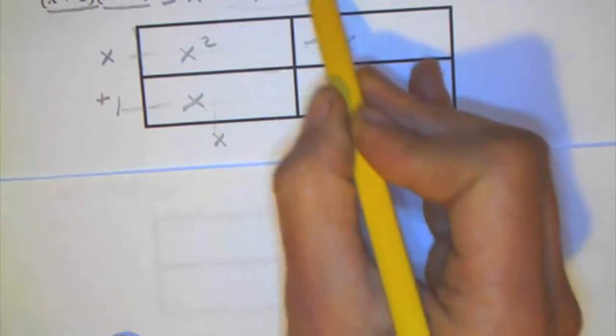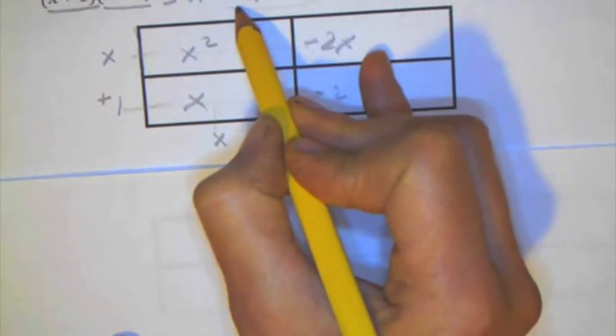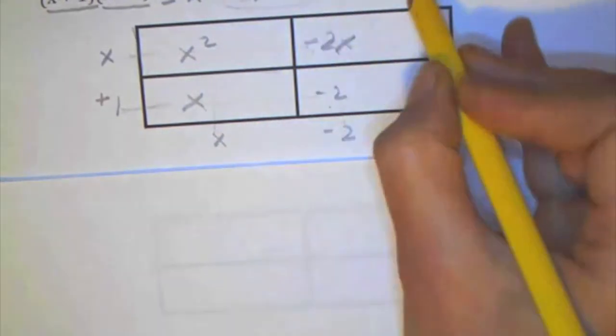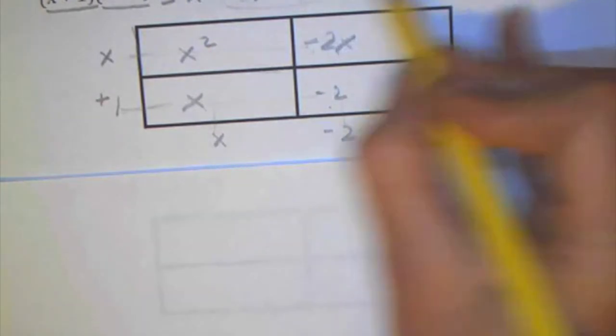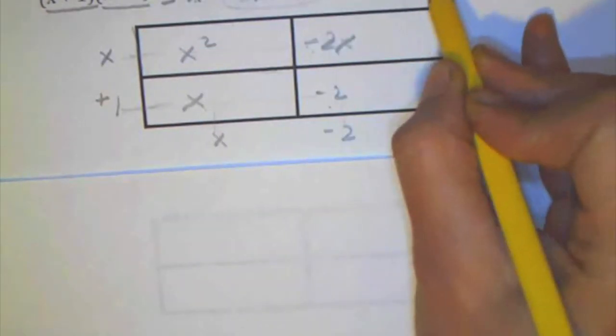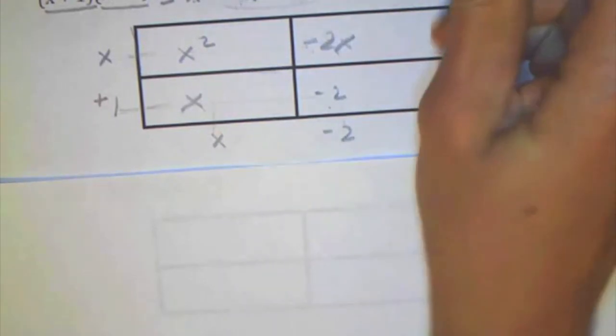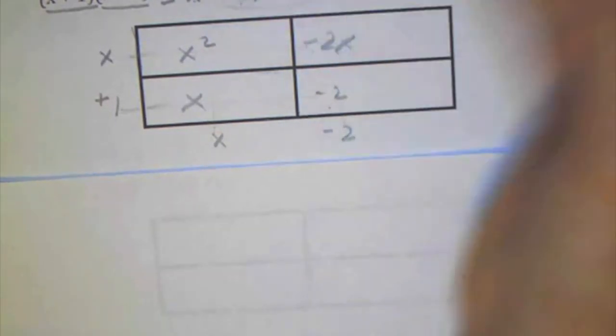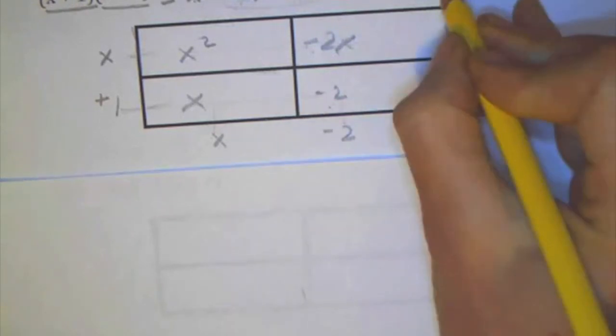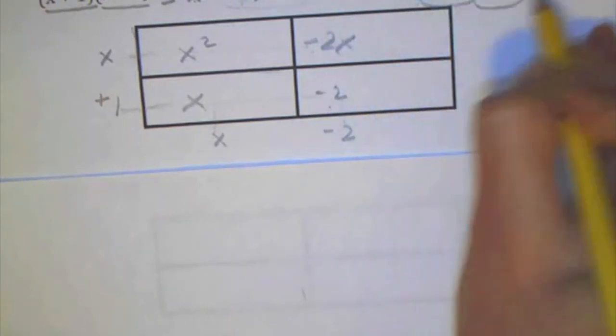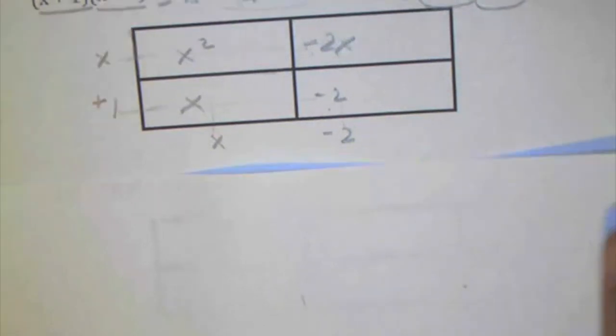Looking to see, I see that there are two things that both have x as a variable with just an exponent of 1. So I can combine those like terms. So I have x squared, negative 2x plus x is negative x minus 2.